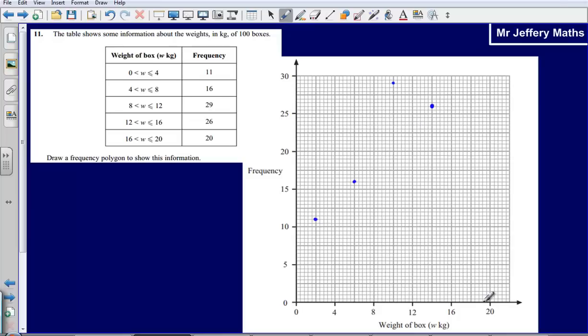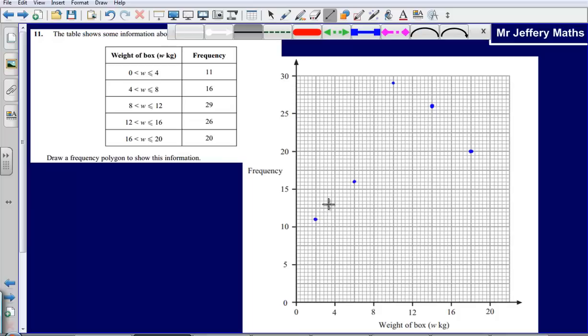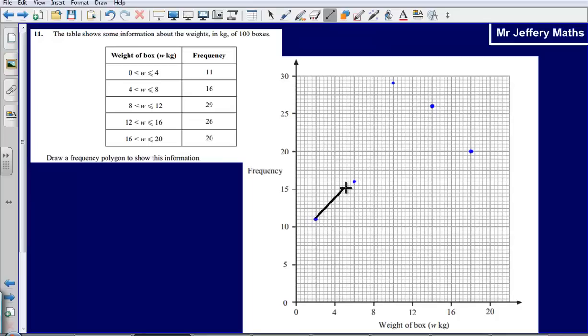And then lastly, 16 to 20 on 20. And then, all that is left now to do is to connect these points with a ruler. And that is our frequency polygon done.